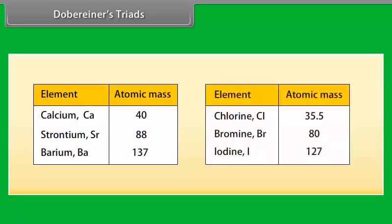in a triad of Calcium (Ca, 40), Strontium (Sr, 88), and Barium (Ba, 137), the mean of the atomic masses of the first and third elements is equal to the atomic mass of the second element. That is, (40 + 137) / 2, which is 88 mu.